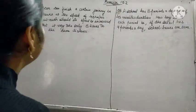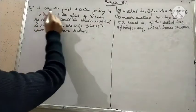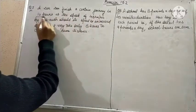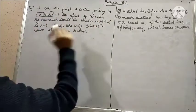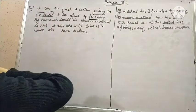Question number 7: It is given that a car can finish a certain journey in 10 hours at the speed of 48 km per hour.